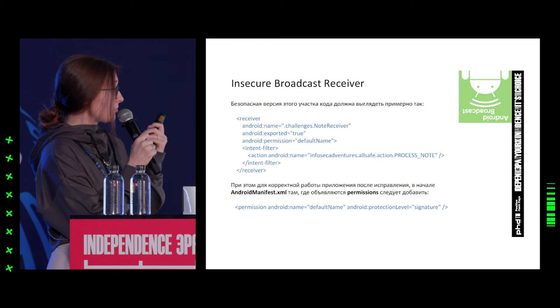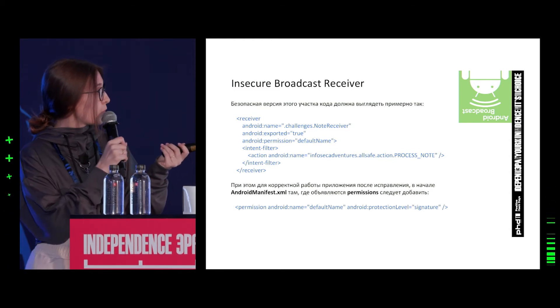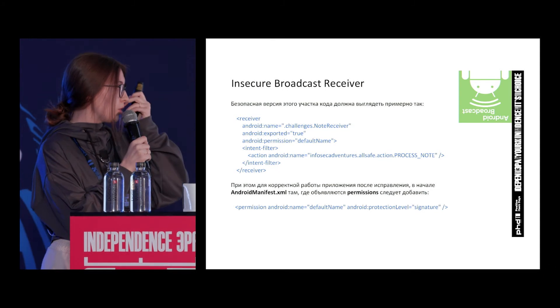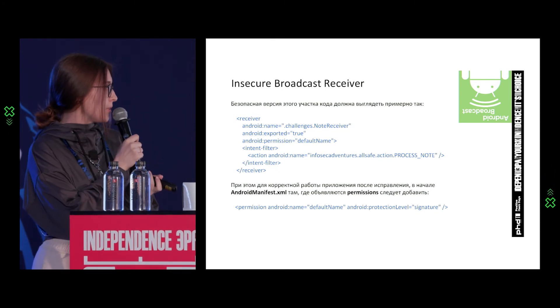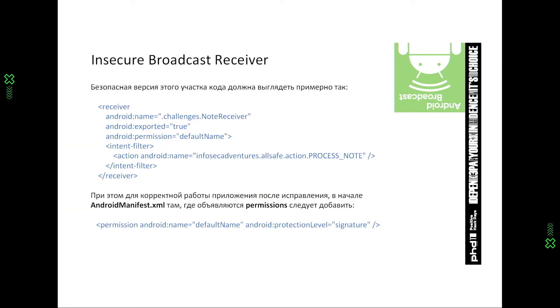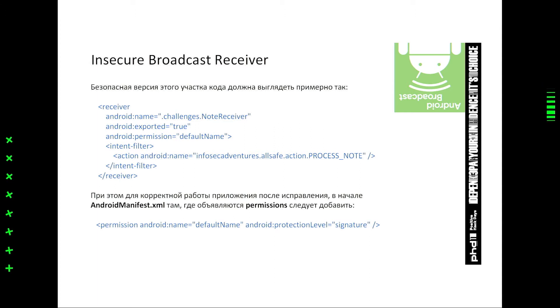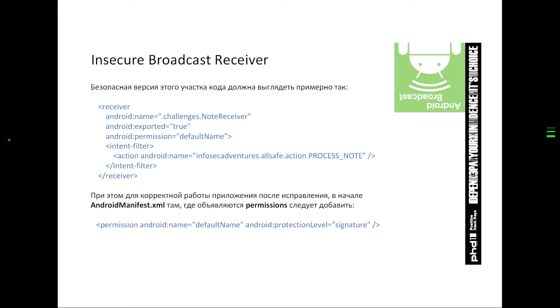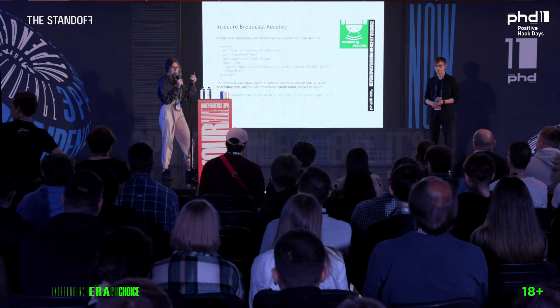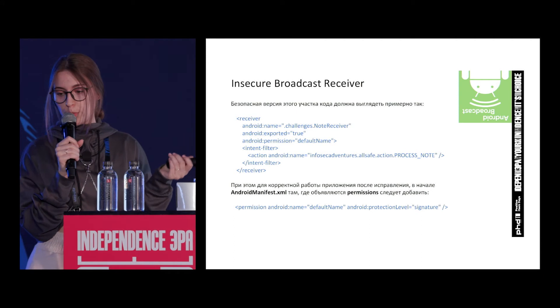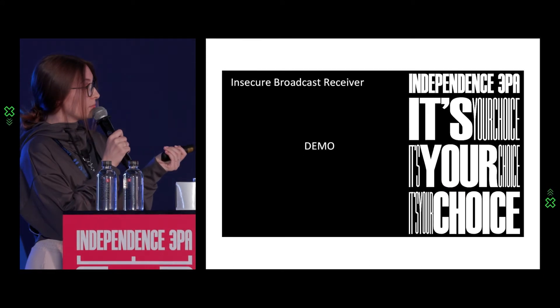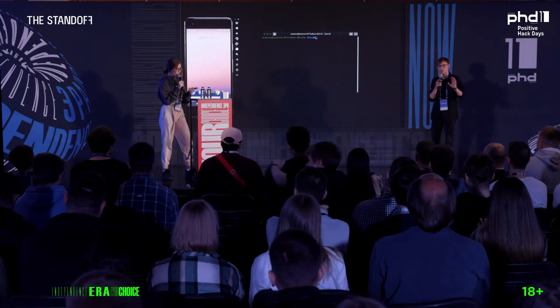So why is it a vulnerability? If it's an exportable receiver, then not just the trusted application but also the adversary's application can send broadcasts that we're going to interact with. If we don't want external interaction, we put exported to false and nobody would interact with us externally. But if it is an ecosystem, we have to have exported=true, and then we add a permission that says it has to be signed with our key to be trusted.